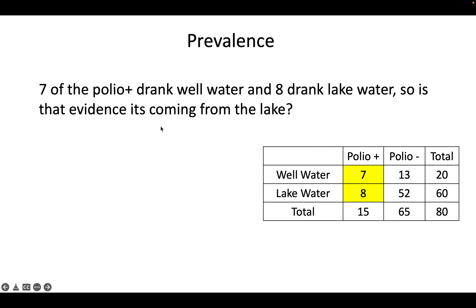At first glance, they might round up everyone with polio and ask whether they drank well water or lake water. Let's say they found that eight people with polio drank lake water and seven drank well water — that might seem like evidence leaning toward lake water, since more polio cases drank lake water. But that's a naive interpretation, because you also need to account for the number of people exposed to each water source.